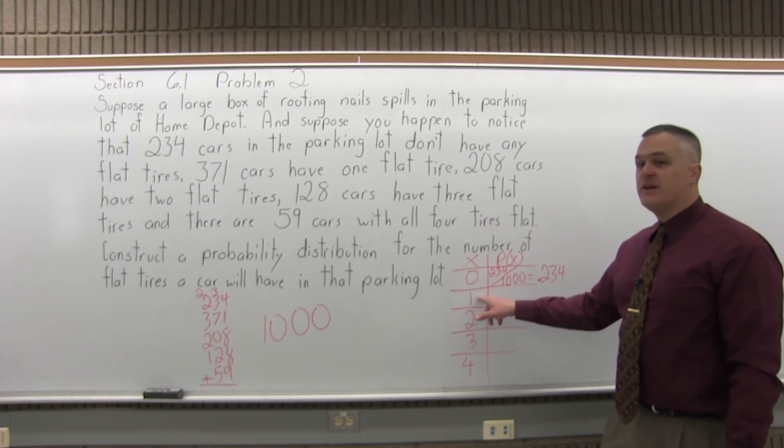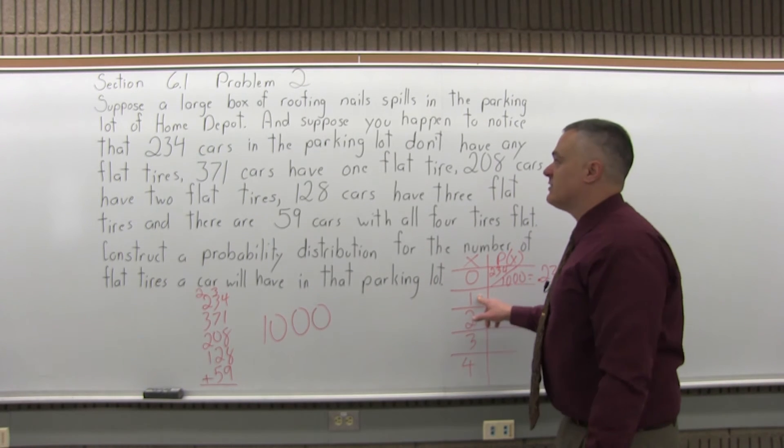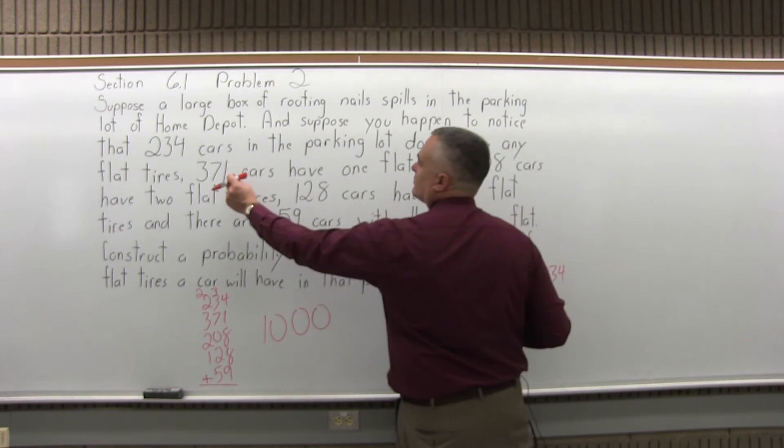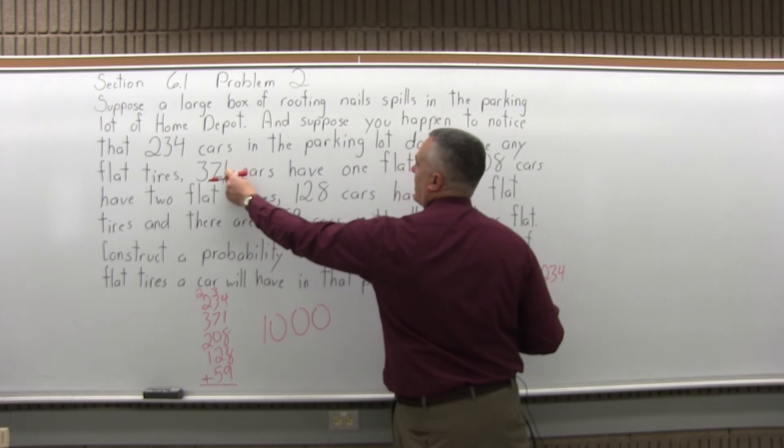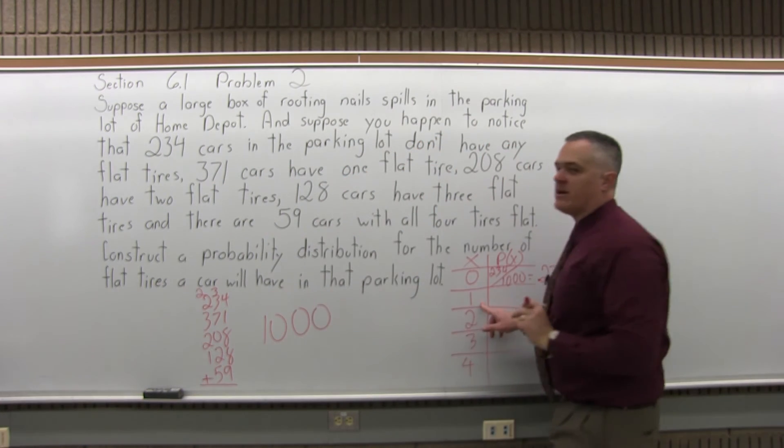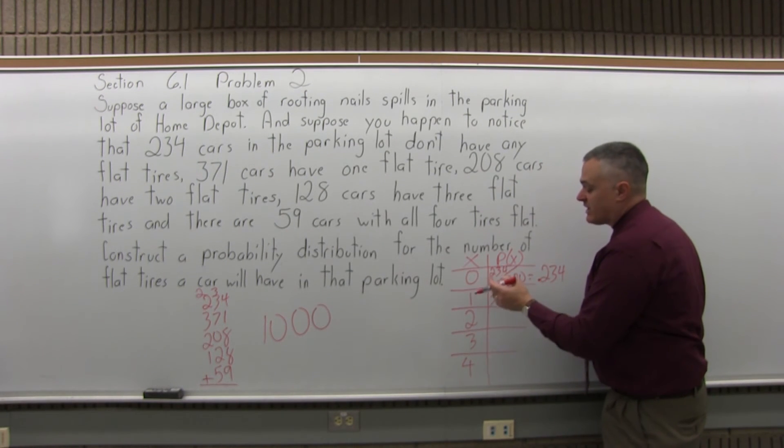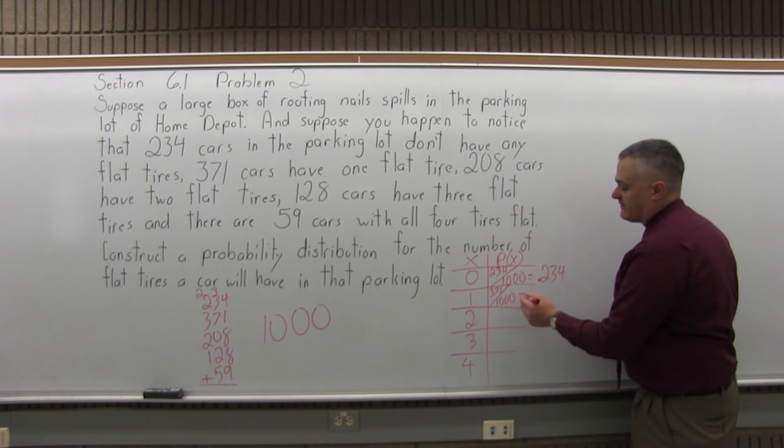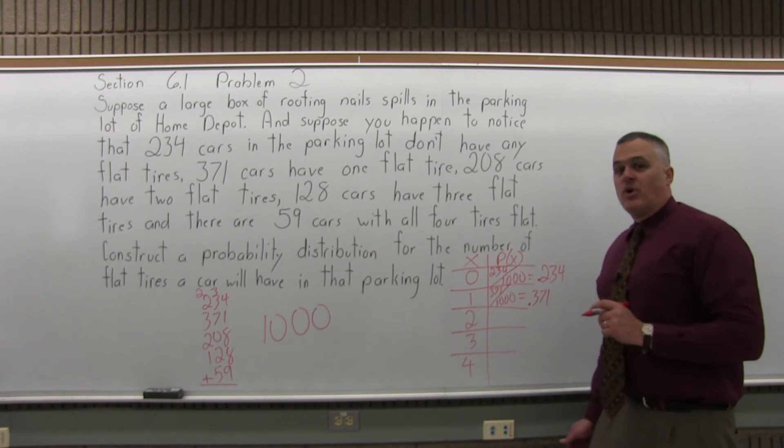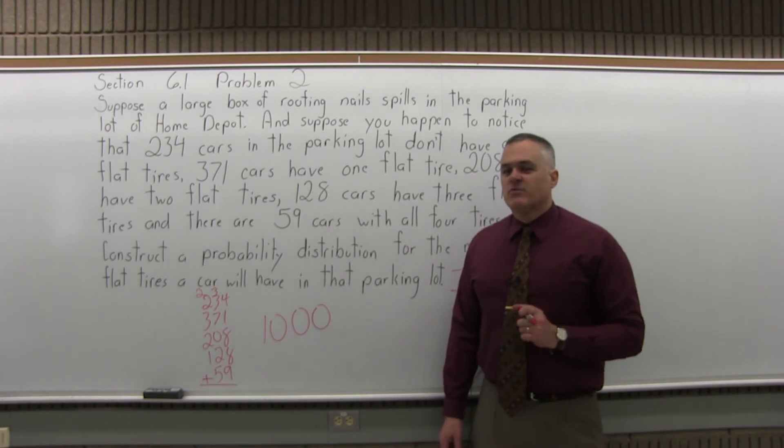Next, the probability of having one flat tire. If you go back to the question and read it, it will say that 371 cars have one flat tire. So the probability that one tire is flat would be 371 out of 1,000 altogether, which again can be converted to a decimal very easily, 0.371 or about 37% probability.